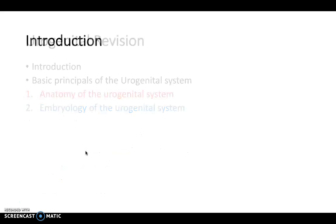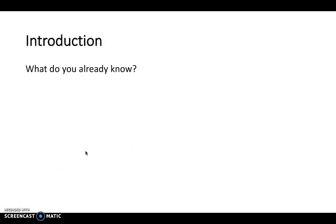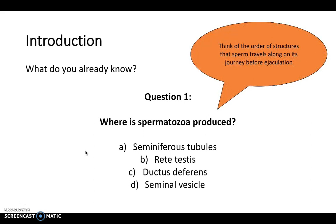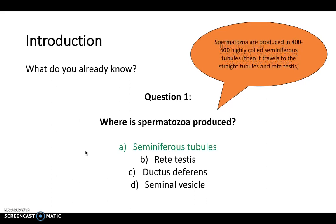For today let's focus on the anatomy and embryology. To start with, let's look at what you already know. Where is spermatozoa produced? Think of the order of structures that sperm travels along in its journey before ejaculation. The spermatozoa is produced in the seminiferous tubules — there are between 400 and 600 of these in the testes — then it travels to the straight tubules, the rete testes, and eventually through the ductus deferens or vas deferens before ejaculation.